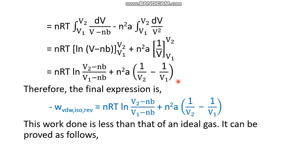Applying the limits gives the result: −W_vdw,iso,rev = nRT·ln[(V₂ − nb)/(V₁ − nb)] + n²a·(1/V₂ − 1/V₁). This is the expression for isothermal reversible expansion of a van der Waals gas — 'vdw' means van der Waals, 'iso' means isothermal, 'rev' means reversible — and the negative sign denotes that the system is doing work.